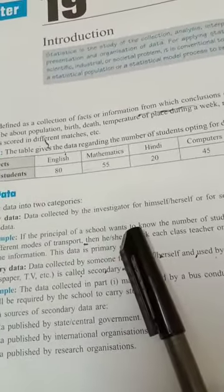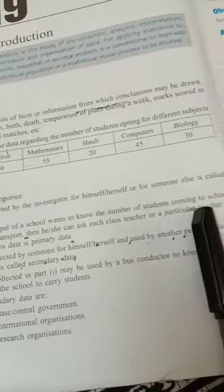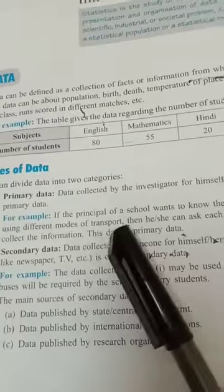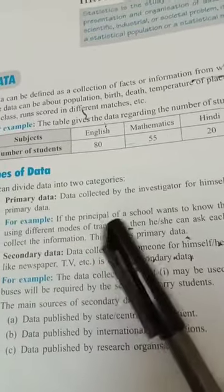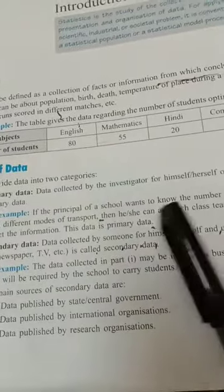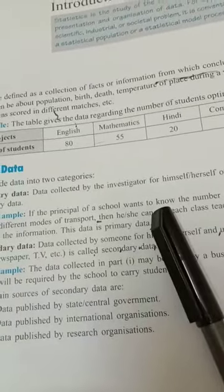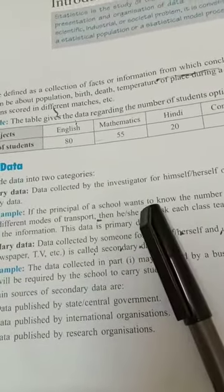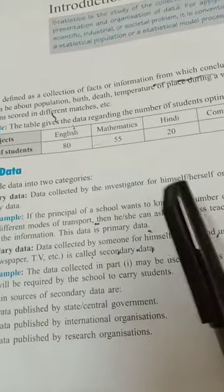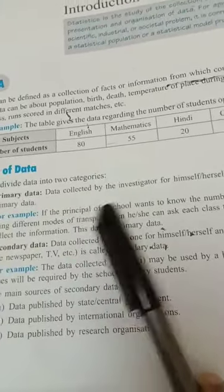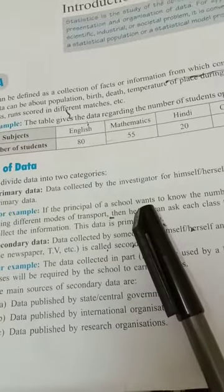If the principal tells a teacher to collect the number of children using different modes of transport, then the teacher collects this information from the students and hands it over to the principal. This is primary data. Clear?